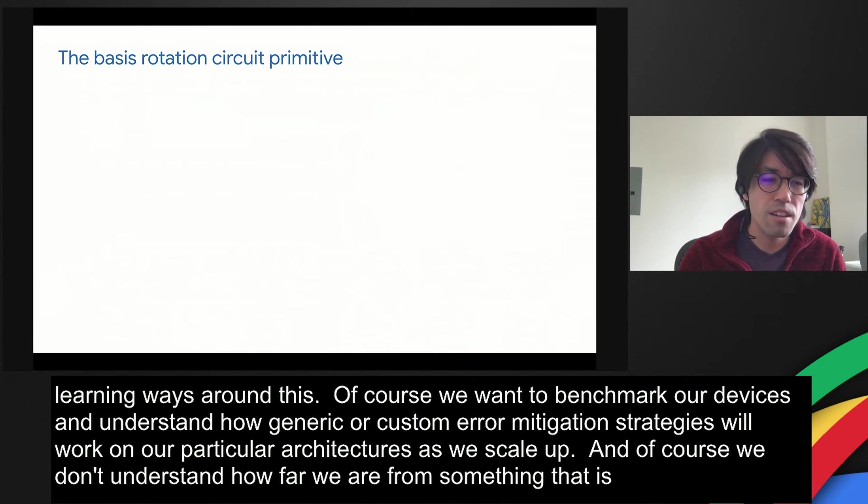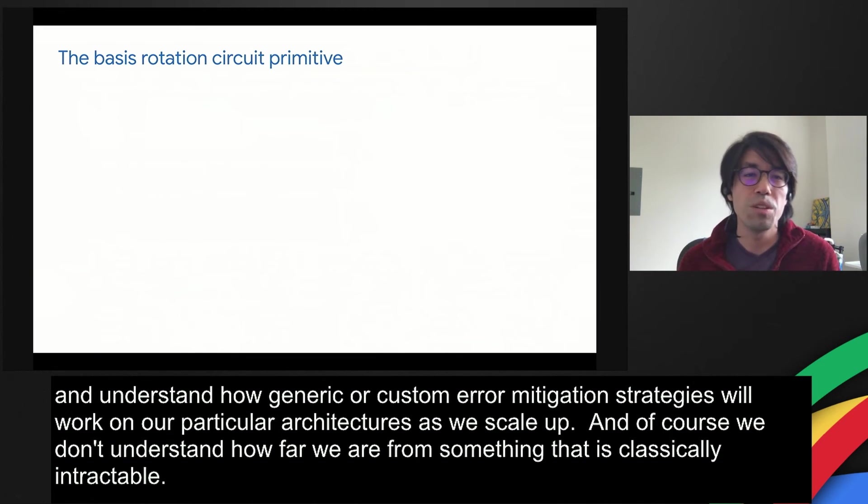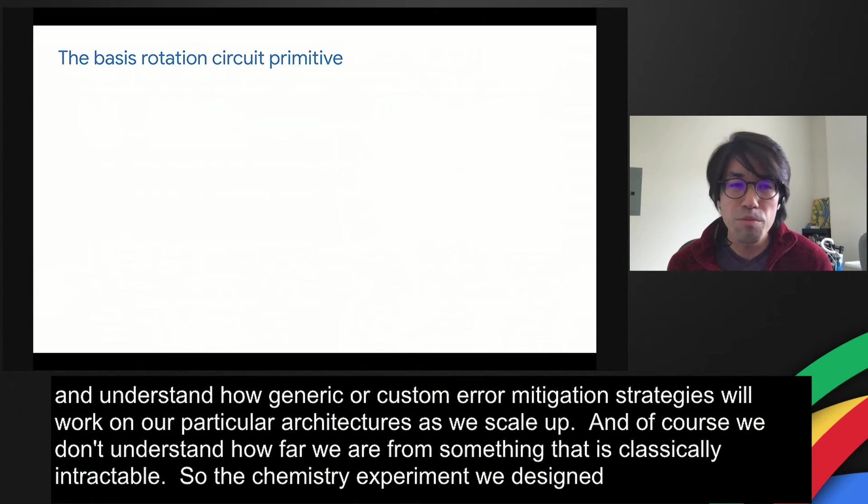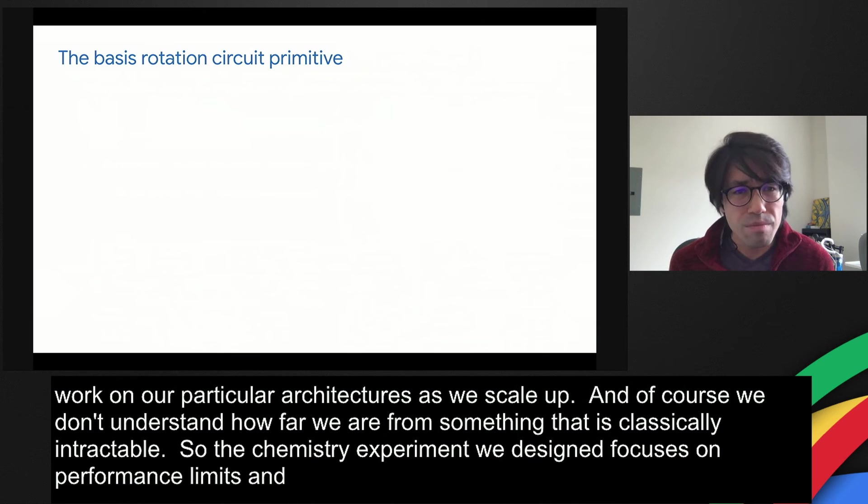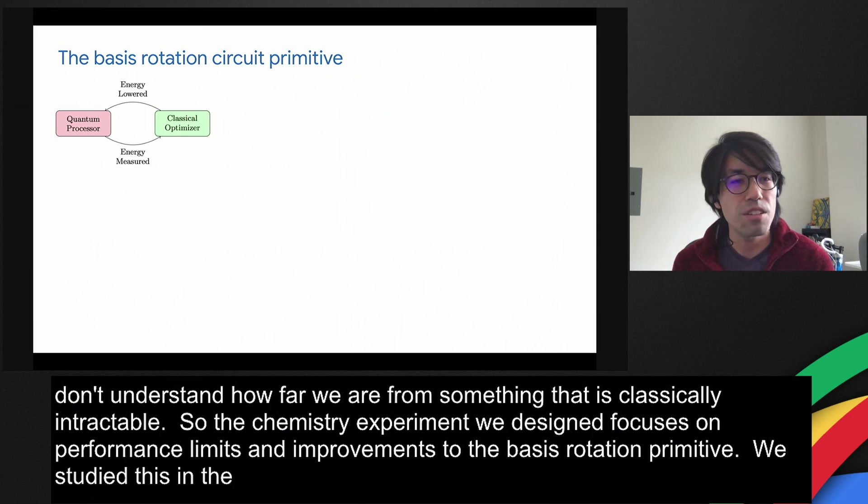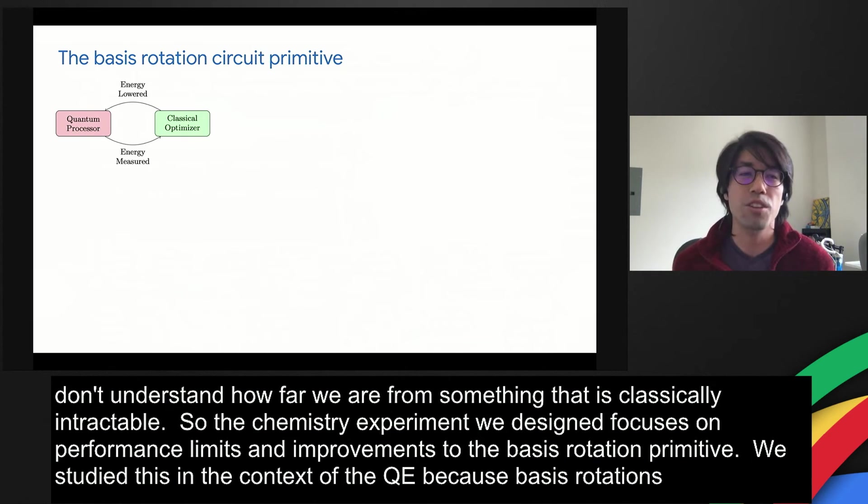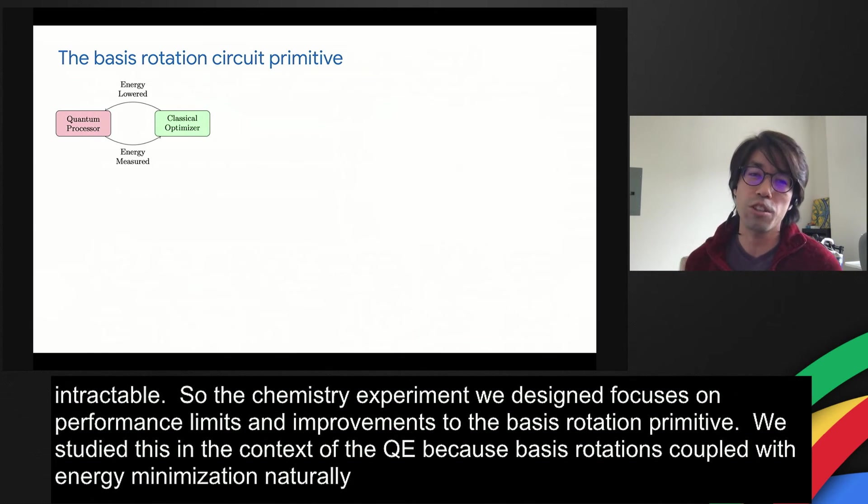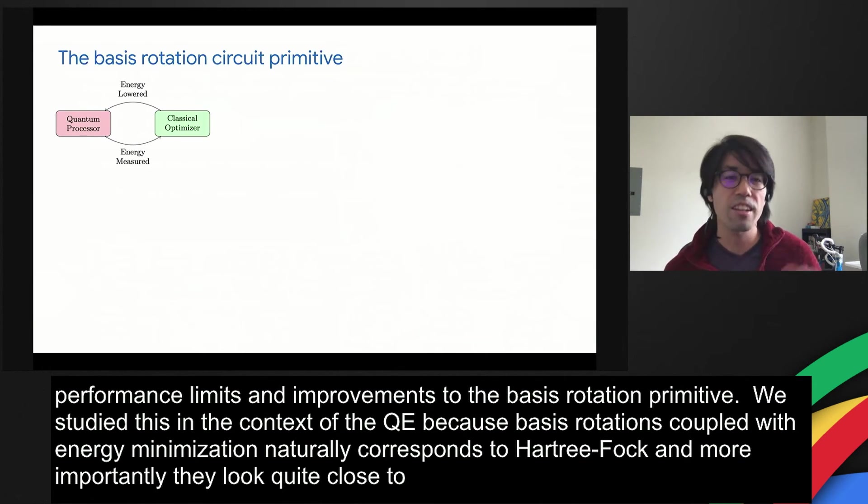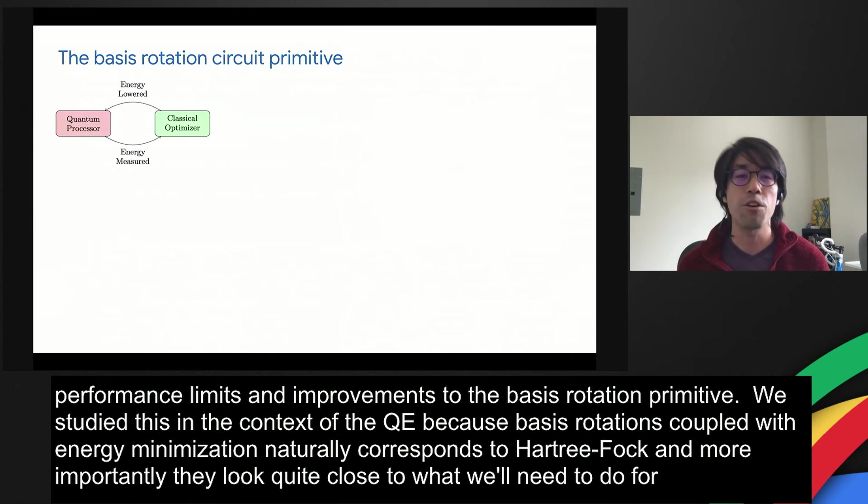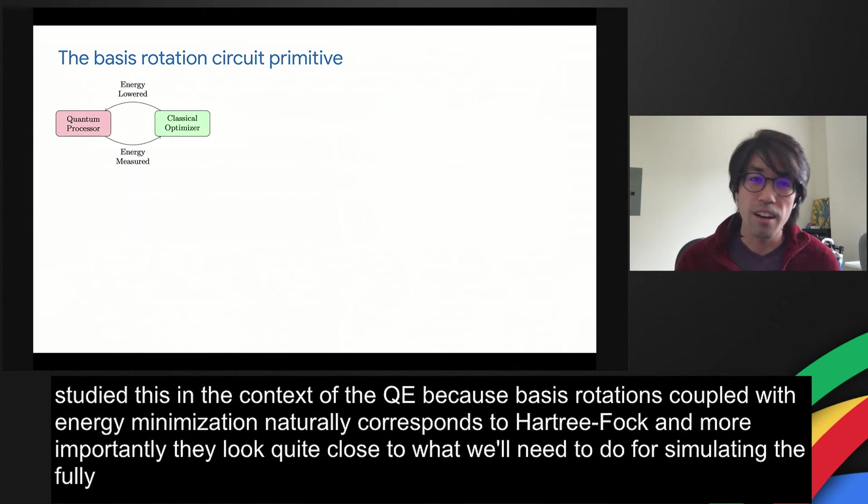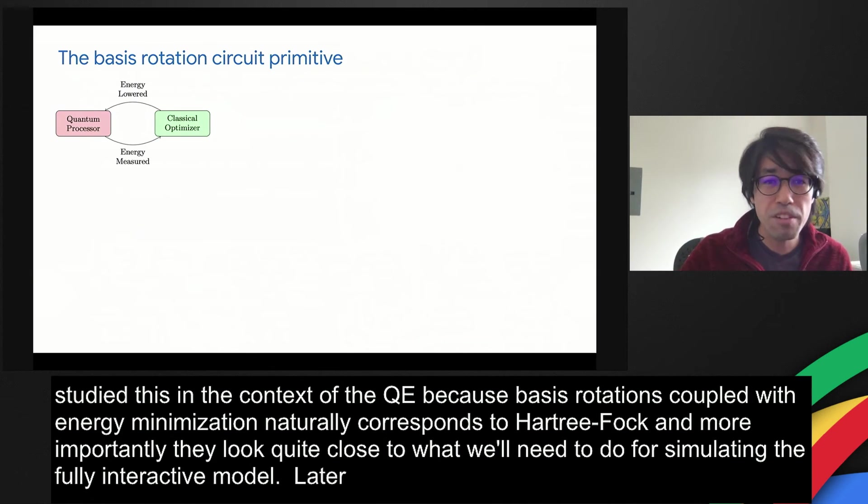The chemistry experiments we designed focus on performance limits and improvements to the basis rotation algorithmic primitive. We studied this in the context of VQE because basis rotations coupled with energy minimization actually corresponds to Hartree-Fock. And more importantly, these circuits actually look quite close to what you'll need to do for simulating the fully interacting model. My colleagues in the next lightning talk will discuss how you can generalize this particular circuit to something a little bit more exciting than mean field theory.